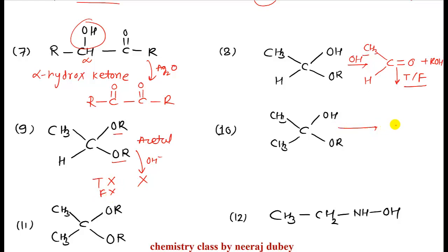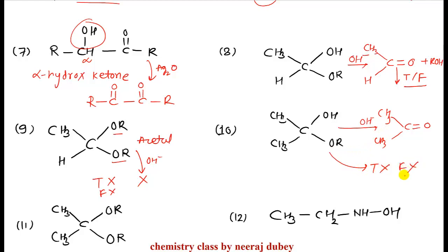Next example: this is a hemiketal. In basic medium, it will hydrolyze to form a ketone. But ketones do not react with Tollens' and Fehling's, so this hemiketal will also not give a positive Tollens' and Fehling's test.